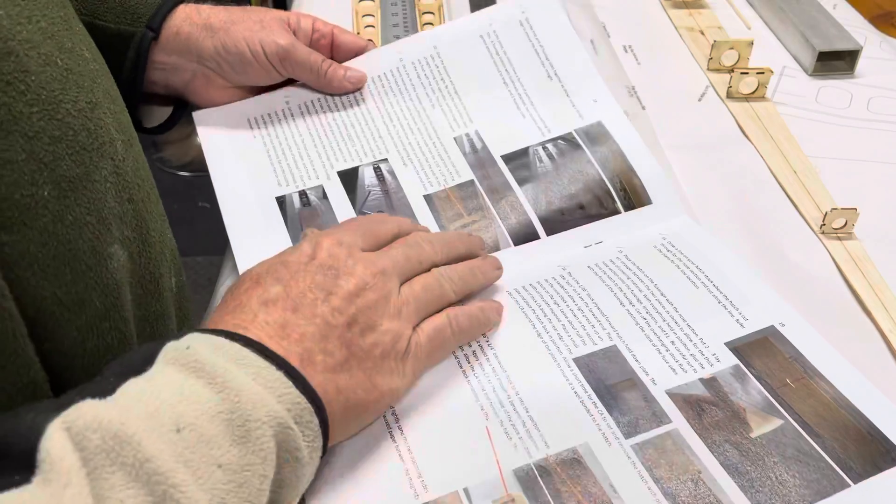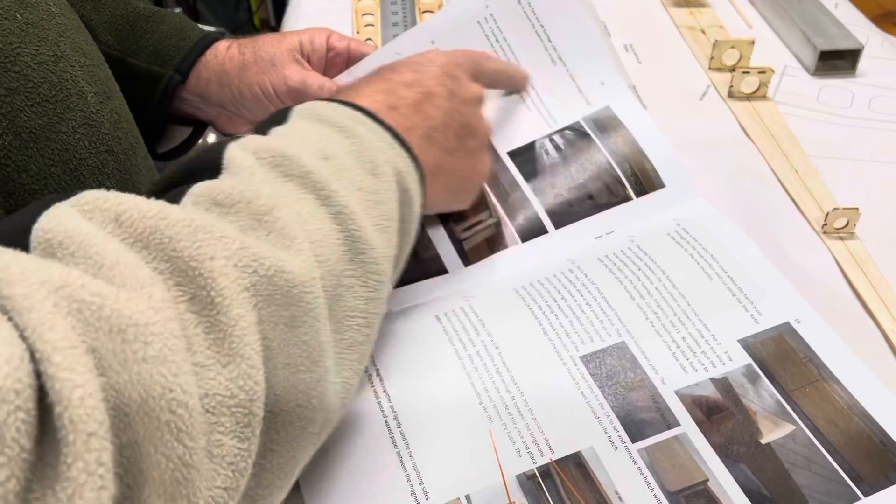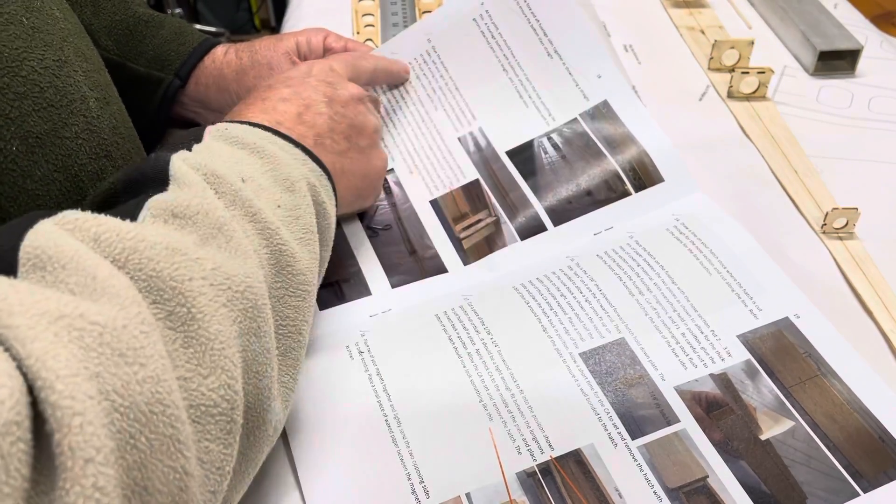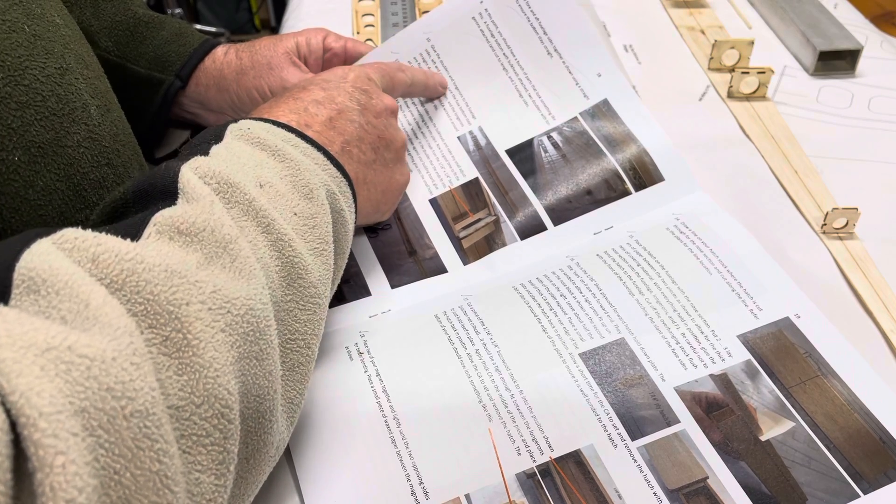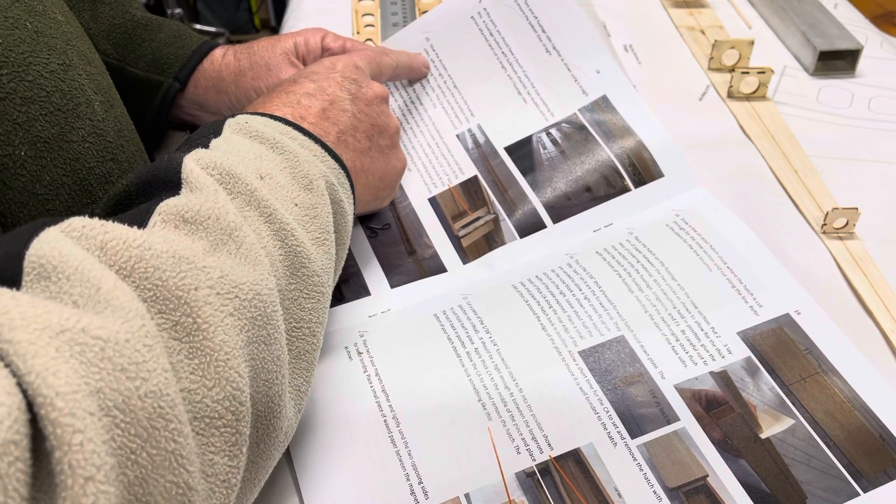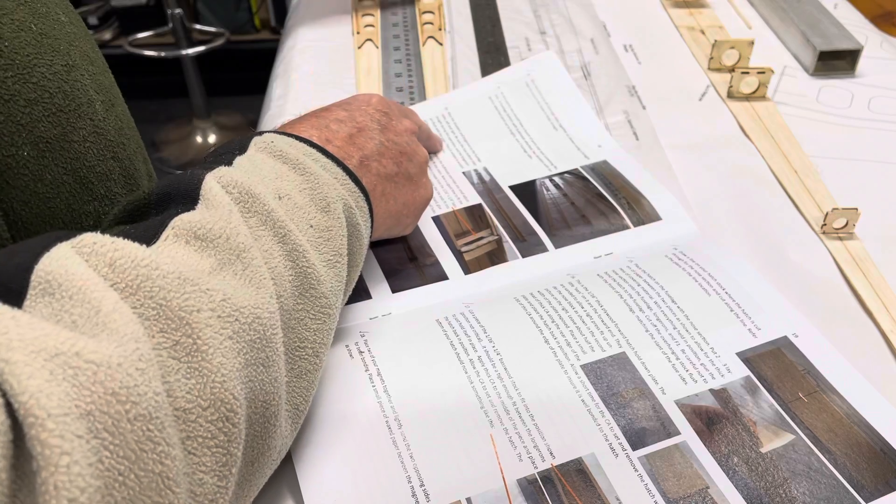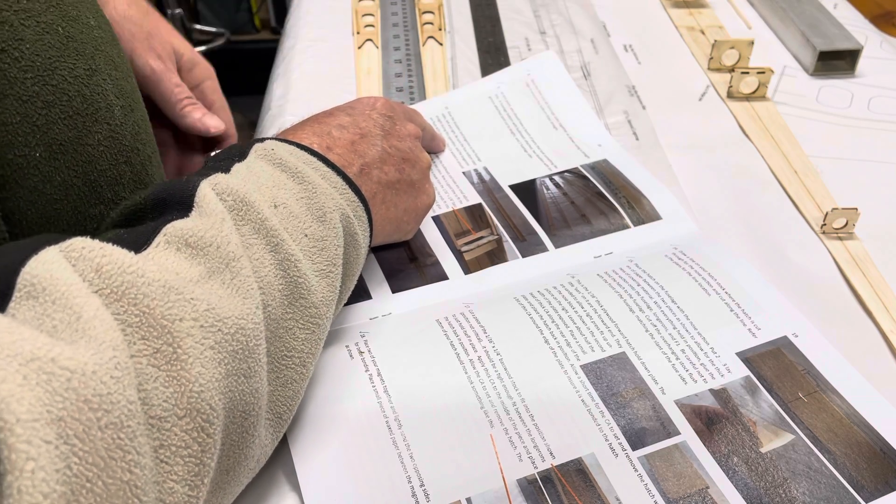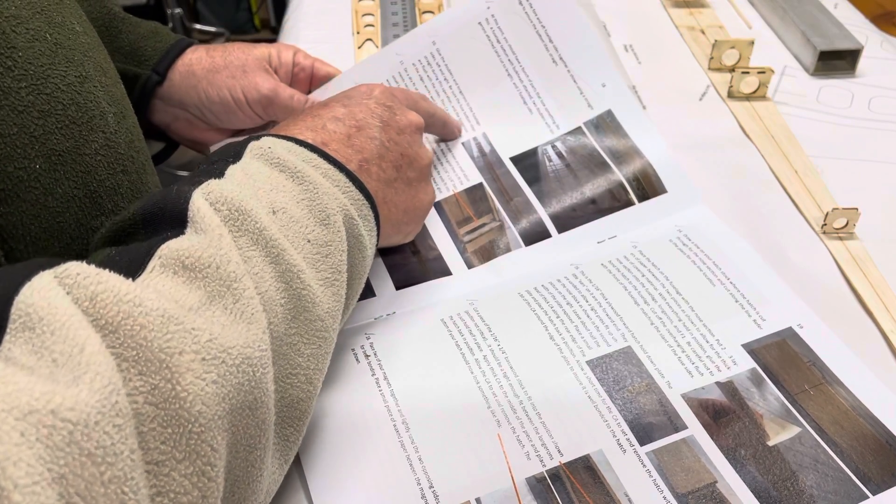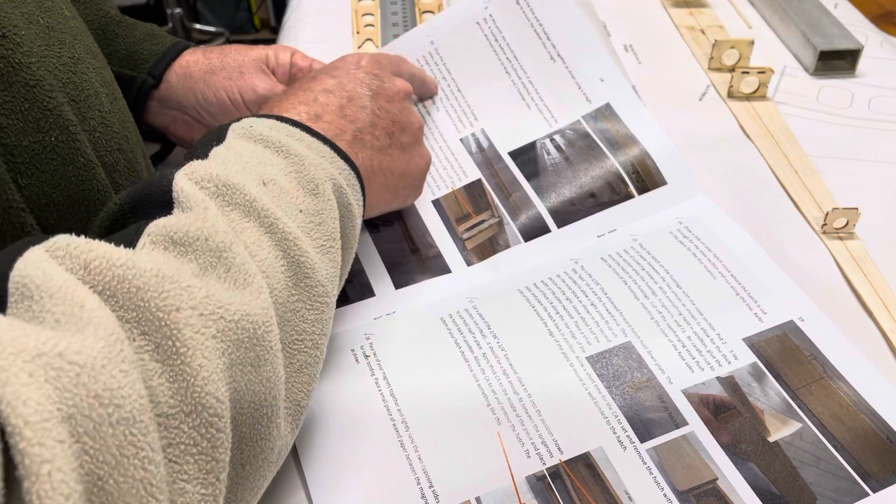I'm up to step 10 of the fuselage, page 18: glue the doublers and longeron onto the fuselage sides, left and right. Notice I've got the writing facing up. Be sure the fuse bottom stays straight during this operation.